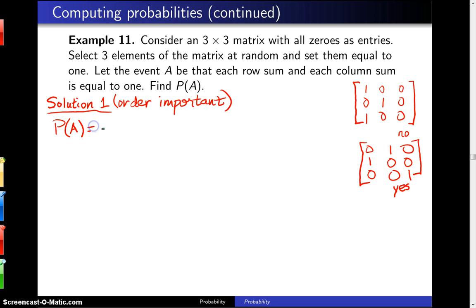So P of A in this case, if the order that we select the three positions for the one is important, then when we started out with the matrix, we had nine different choices, right? In the denominator, we're calculating all the possibilities. And then once that position, which was the middle position here, was taken, we had eight positions left for the second one to put in place and then seven for that third one.